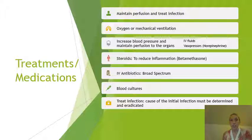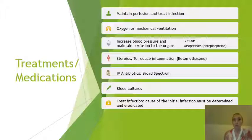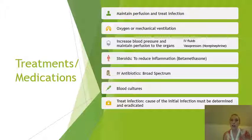Steroids are used to reduce inflammation, such as betamethasone, along with IV antibiotics. Treatment will start with a broad-spectrum antibiotic to treat a variety of bacteria. Blood cultures are performed to identify the cause, but even before those results are back, the broad-spectrum antibiotic will be started because there's not a lot of time to act. Once results come back, the doctor may adjust the antibiotic to fight the specific antigen more effectively, but you don't want to waste any time in that initial critical period.